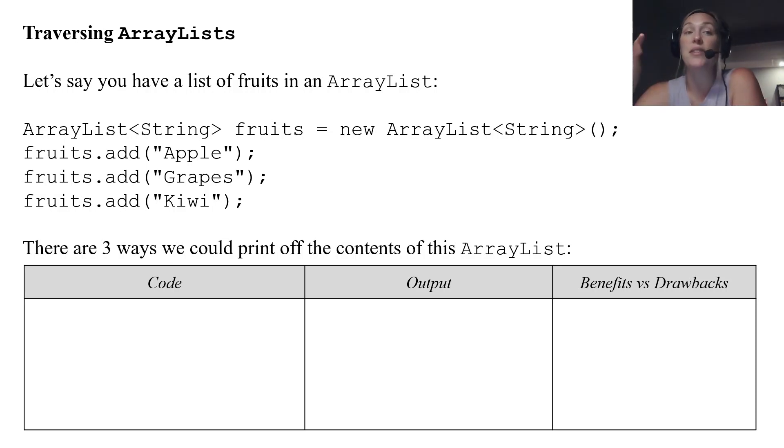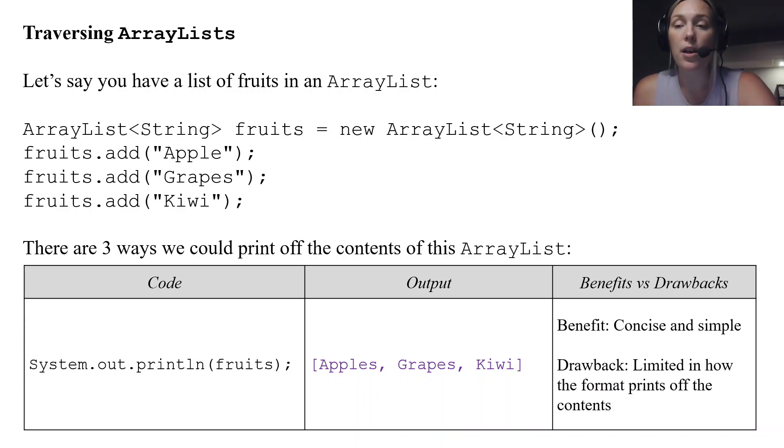There are three ways we can print off the contents of the ArrayList. The first way is what we've seen so far, just using the reference for the ArrayList fruits and putting that in a print line statement. This will print off apples, grapes, kiwi, kind of how we would keep track of it on a piece of paper with square brackets, commas between them. And what it's doing is calling on the ArrayList toString method. So it is concise and simple. One line of code looks beautiful, you know what it's going to do, but you're limited in how it formats the contents.